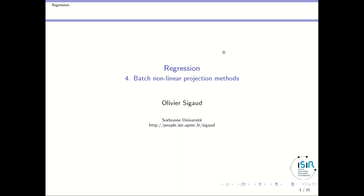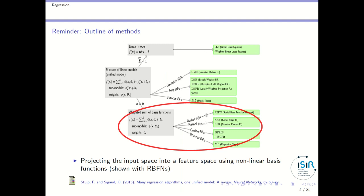Welcome to my fourth class about regression. In the previous classes we have seen how to deal with linear functions using the standard least squares algorithm, and then how to use weighted least squares in combination with local linear models using locally weighted regression to solve nonlinear function approximation. The third family, at the center of this class, is radial basis function networks.